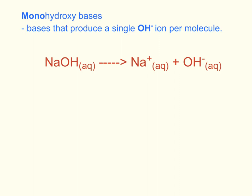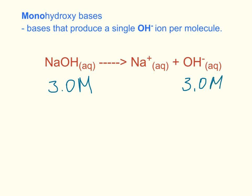Monohydroxide bases are the bases that produce a single hydroxide ion per molecule of base dissolved in water. Sodium hydroxide, when dissolved in water, produces one sodium ion and one hydroxide ion. We are mostly concerned with the concentration of hydroxide ions when talking about bases. So if we have a solution of sodium hydroxide with molarity 3.0, the concentration of hydroxide ions would be the same — 3.0 molarity.